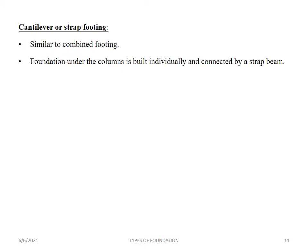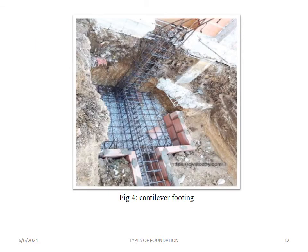The next one is cantilever or strap footing, which is also similar to combined footing. In this cantilever footing, the foundation under the columns is built individually and connected by using a strap. This can be seen in the figure showing cantilever footing or strap footing.